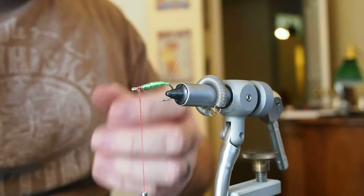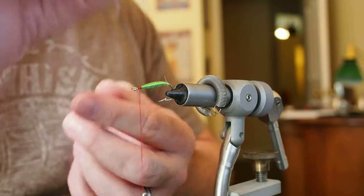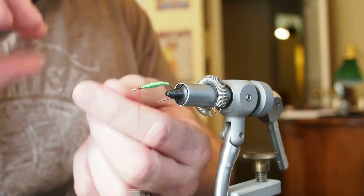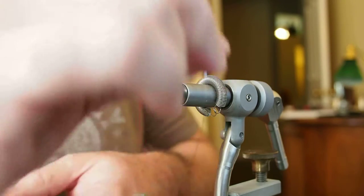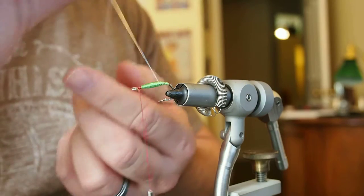Next we're going to advance our tinsel forward. So these should be nice, kind of wide wraps. Try to keep them even. Just adds a nice little flashy accent to that body.